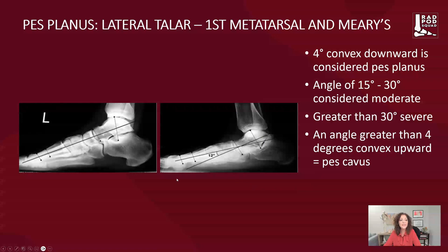Looking at the lateral first metatarsal angle, we can appreciate Meary's line in the normal situation — the bisection of the talus and the bisection of the first metatarsal. In pes planus, notice that the talar vector declinates and decreases to under 12 degrees. An angle of between 15 to 30 degrees is considered moderate disease, and greater than 30 degrees is considered severe.